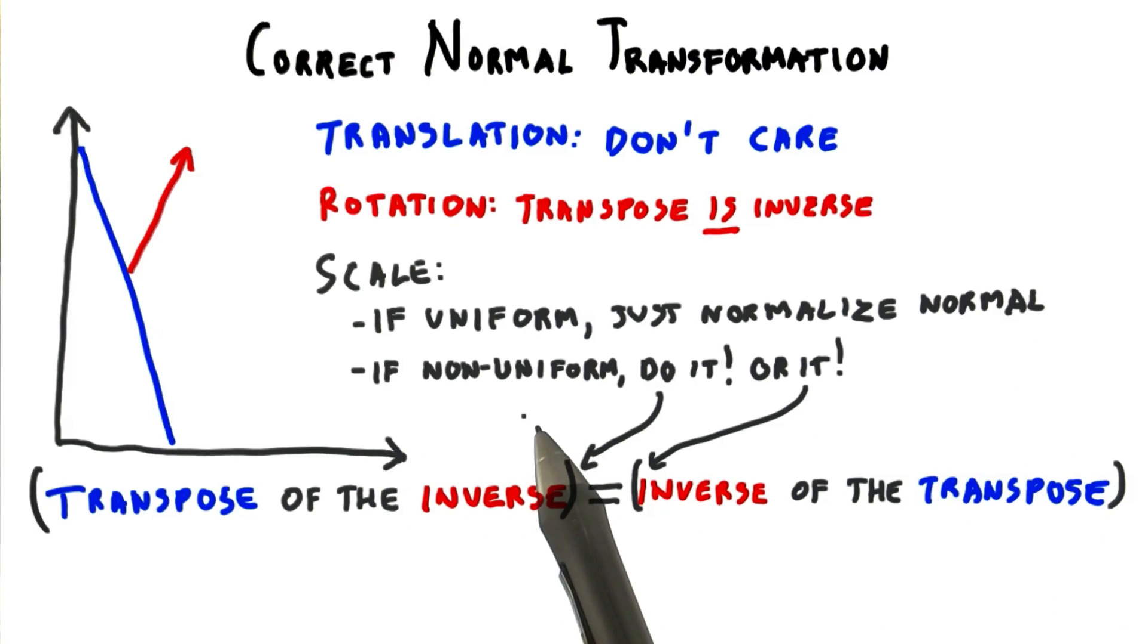For non-uniform scaling, where the shape of the object is changed, we must explicitly compute the special transpose of the inverse matrix in order to transform normals correctly. Or you can do the inverse of the transpose.